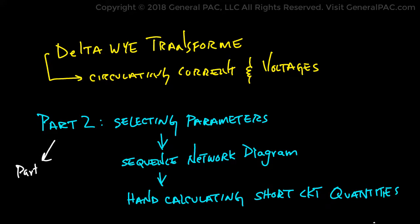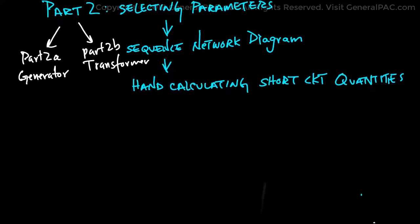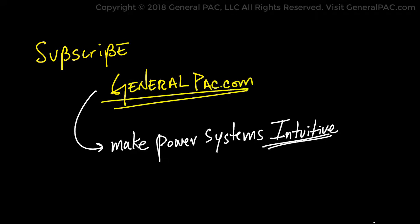In part 2a, we will be selecting the parameters for the synchronous generator. In part 2b, we shall select parameters for the delta Y transformer. If this video was helpful for you, please consider subscribing to GeneralPAC.com. Our goal is to make power systems intuitive.